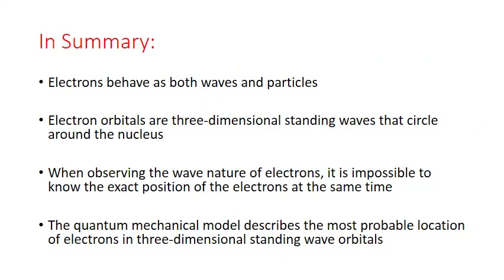In summary: electrons behave as both waves and particles. Electron orbitals are three-dimensional standing waves that circle around the nucleus. And when observing the wave nature of electrons, it's impossible to know the exact position of the electrons at the same time. The quantum mechanical model describes the most probable location of electrons in three-dimensional standing wave orbitals.